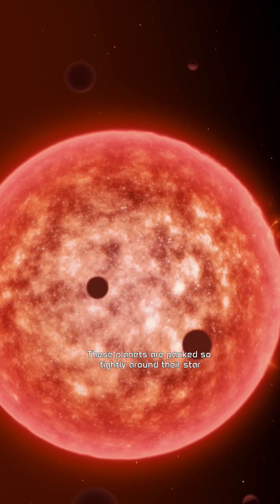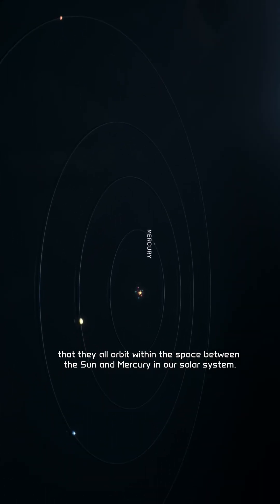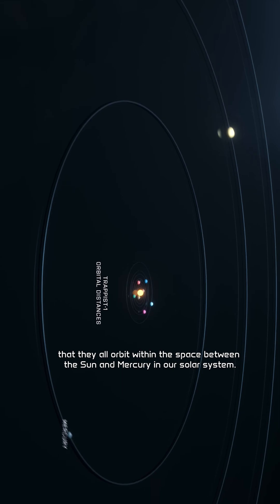These planets are packed so tightly around their star that they all orbit within the space between the Sun and Mercury in our solar system.